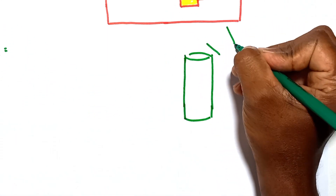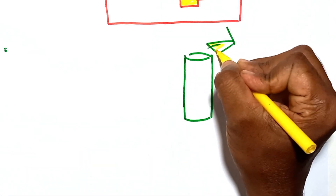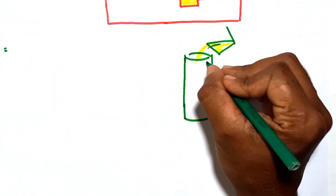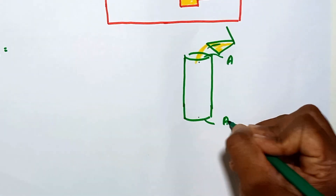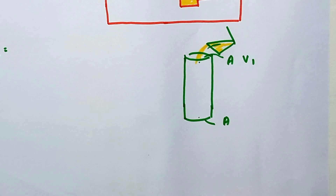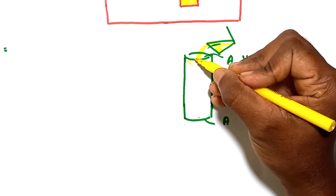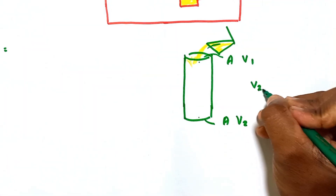When pouring molten metal into a cylindrical sprue, let's consider the top and bottom. The cross-sectional area at the top is A and at the bottom is also A. The starting velocity is v1. Because gravity acts on the molten metal, it accelerates as it travels downward, so the velocity at the bottom v2 is greater than v1.